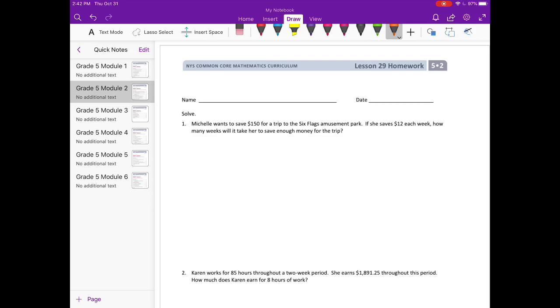Lesson 29 homework. Number one, solve. Michelle wants to save $150 for a trip to the Six Flags Amusement Park. If she saves $12 each week, how many weeks will it take her to save enough money for the trip?